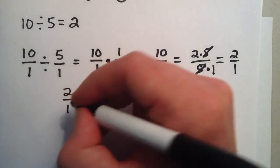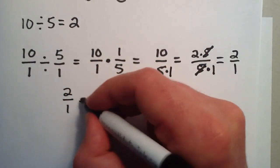Now any number divided by the number 1 is really just itself.